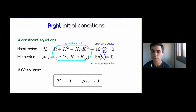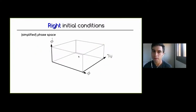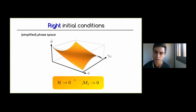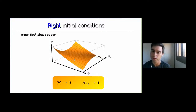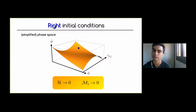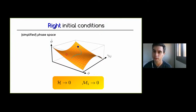Instead of randomly choosing a configuration, we have a constraint surface in phase space where the Hamiltonian and momentum constraints are satisfied. When studying cosmological problems we must ensure the initial data lies on this surface and that during evolution it remains there. If we choose something off-constraint, or if it starts on-constraint but drifts off, we cannot trust our simulations — it means either the initial conditions or the evolution code is wrong.